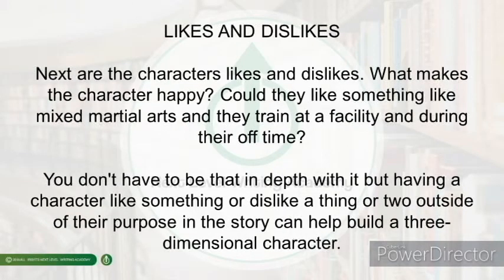The next thing on the character attributes worksheet is the character's likes and dislikes. What makes your character happy? Could they like something like mixed martial arts and possibly train at a facility during their time off in the story? Or maybe they like race car driving, or maybe they don't and think races and events like NASCAR are dangerous to the environment and want to stop it.